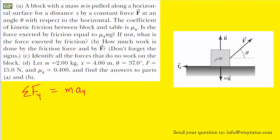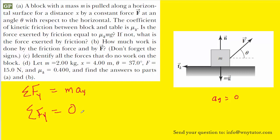Presumably the block is not accelerating either upward or downward, so the acceleration in the y direction is zero meters per second squared. If we substitute zero in for a y, we can say that the sum of the forces in the y direction is equal to the mass times zero, which of course would be zero. And so that's key to this question.